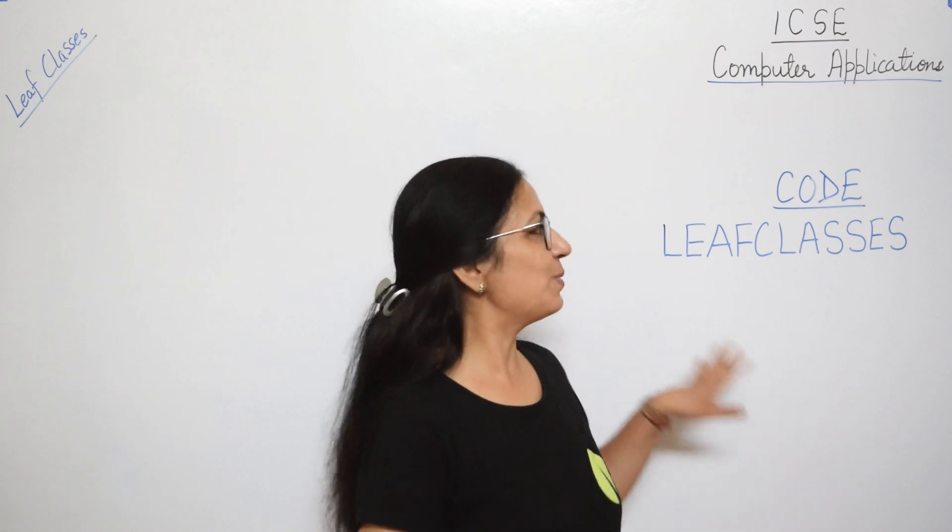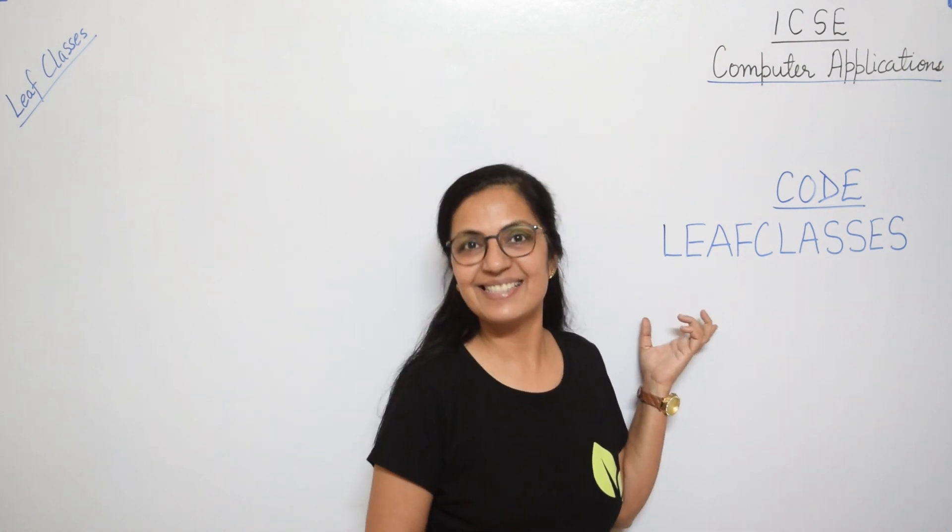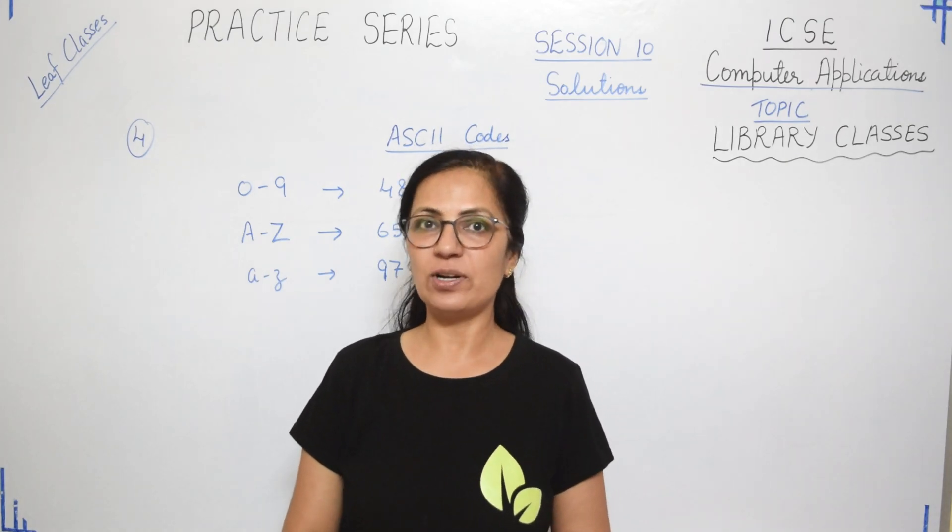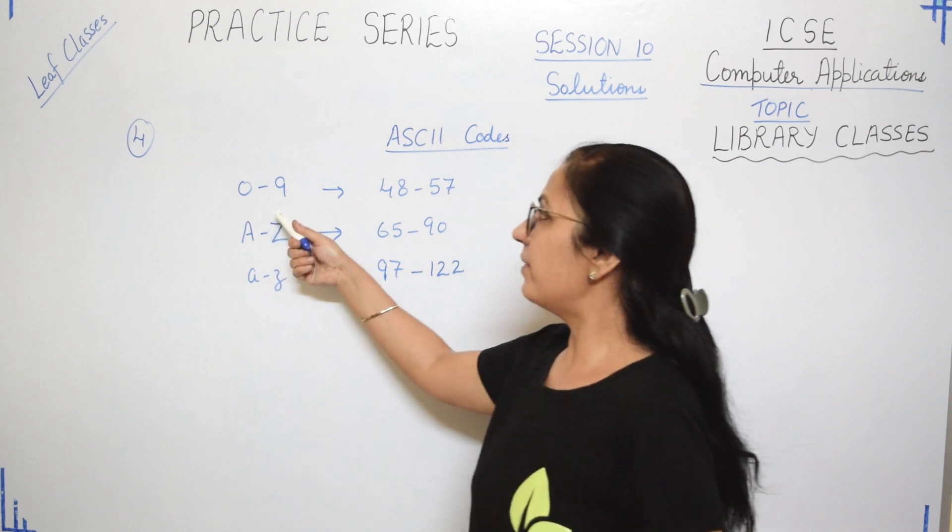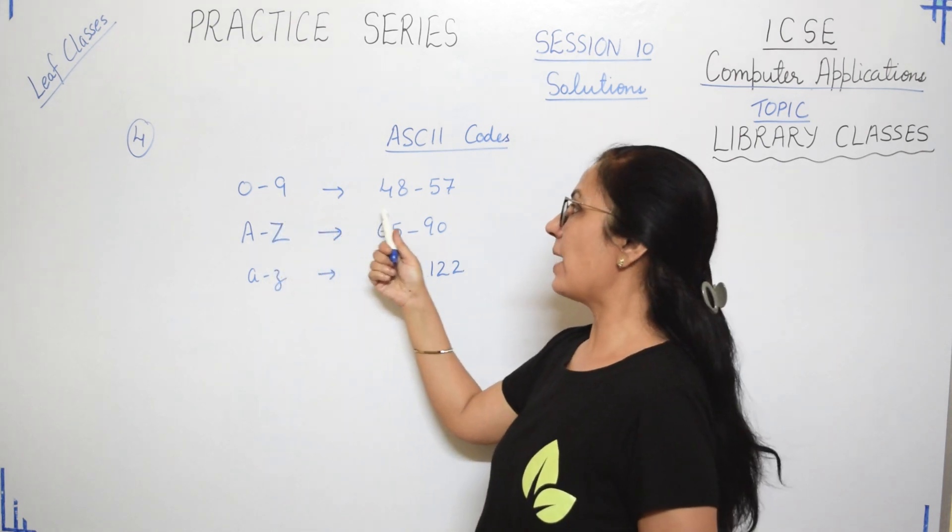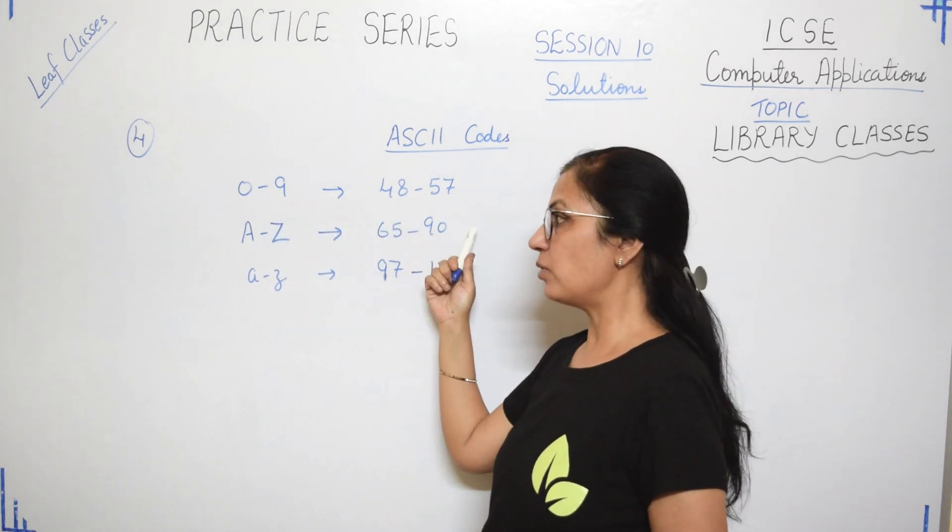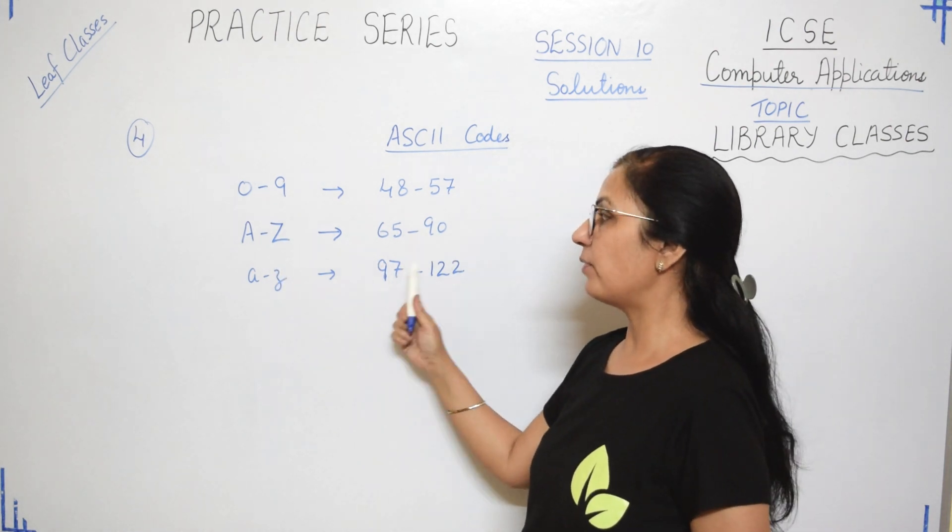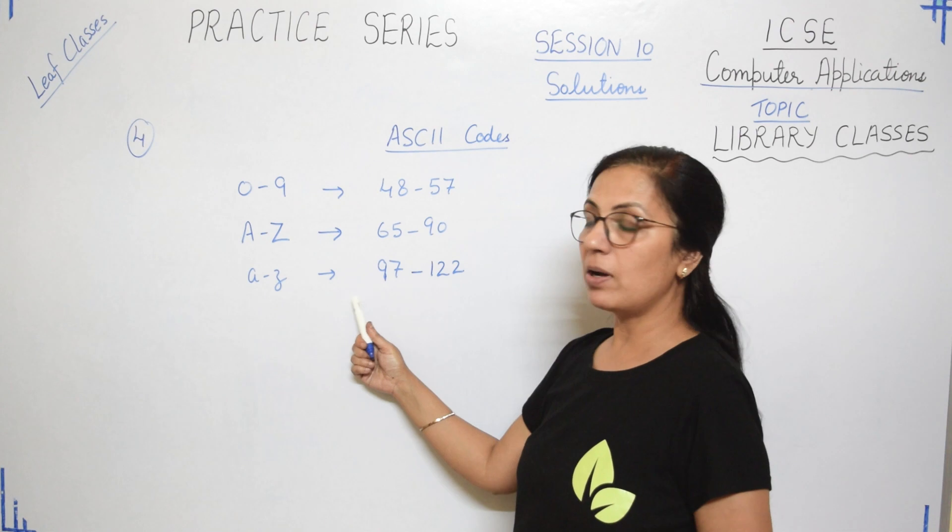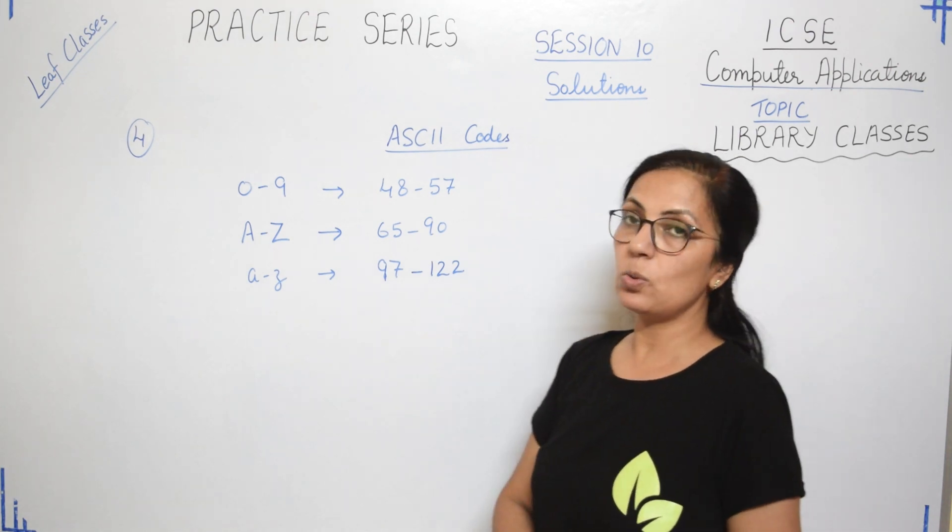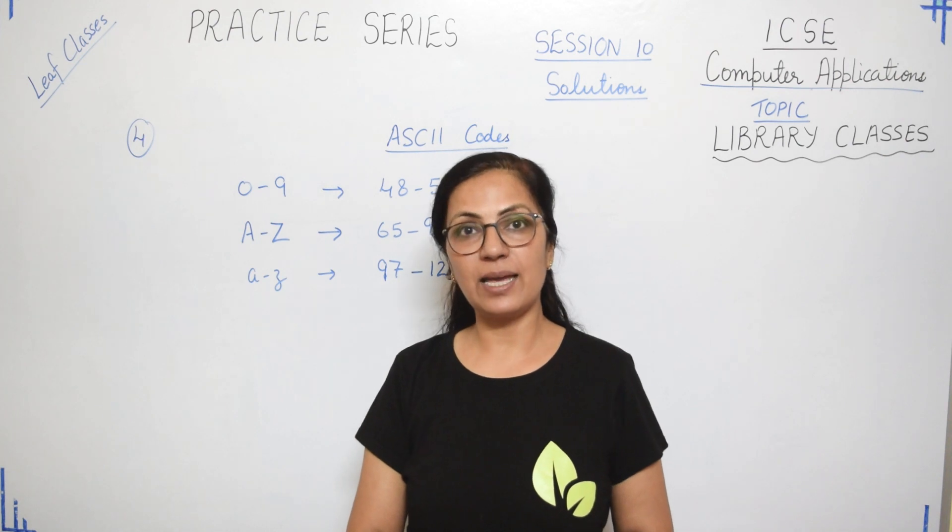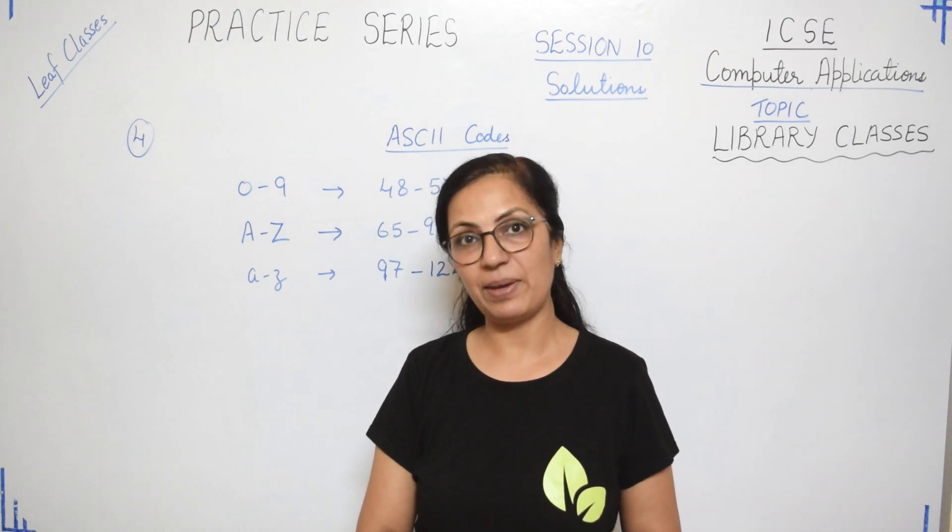Question number four says: give the ASCII code for the given values. First is 0 to 9 digits - we have the ASCII code from 48 to 57. Capital A to capital Z - it is 65 to 90. Small a to small z - it is 97 to 122. I hope all of you know these ASCII codes because these will be used in your programming as well.